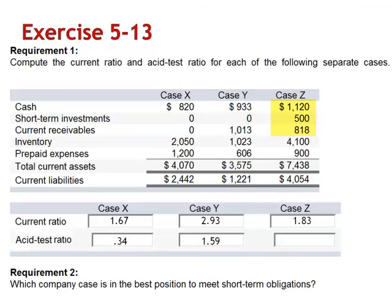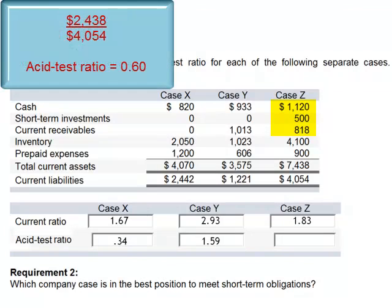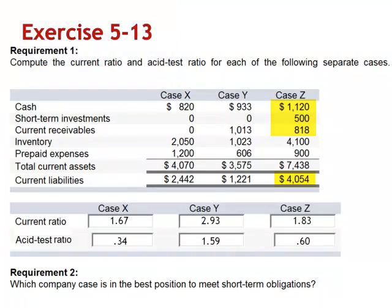And for case Z, the numerator is the sum of cash, short-term investments, and current receivables: $2,438, divided by current liabilities, 4,054. The acid test ratio is 0.60.